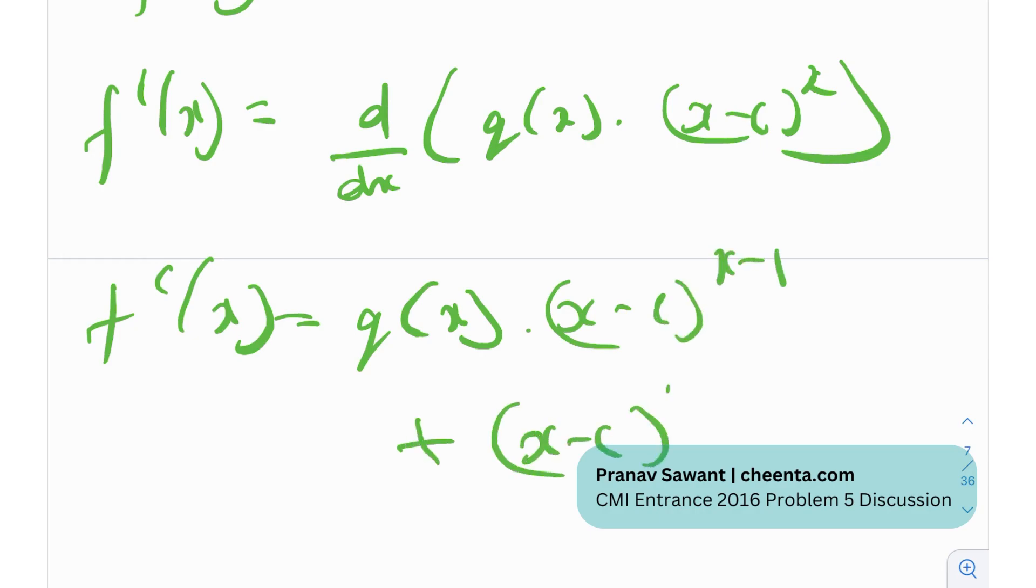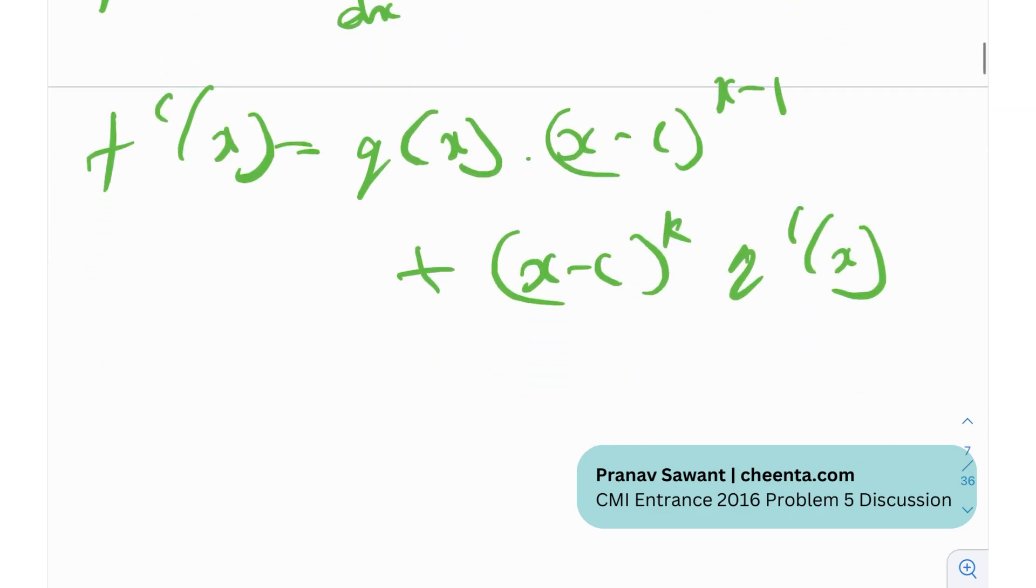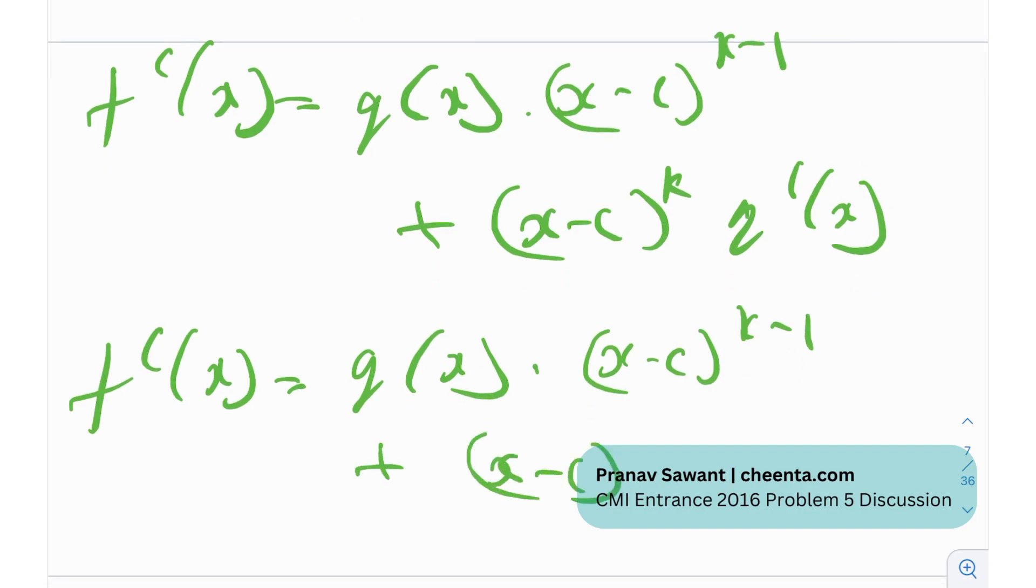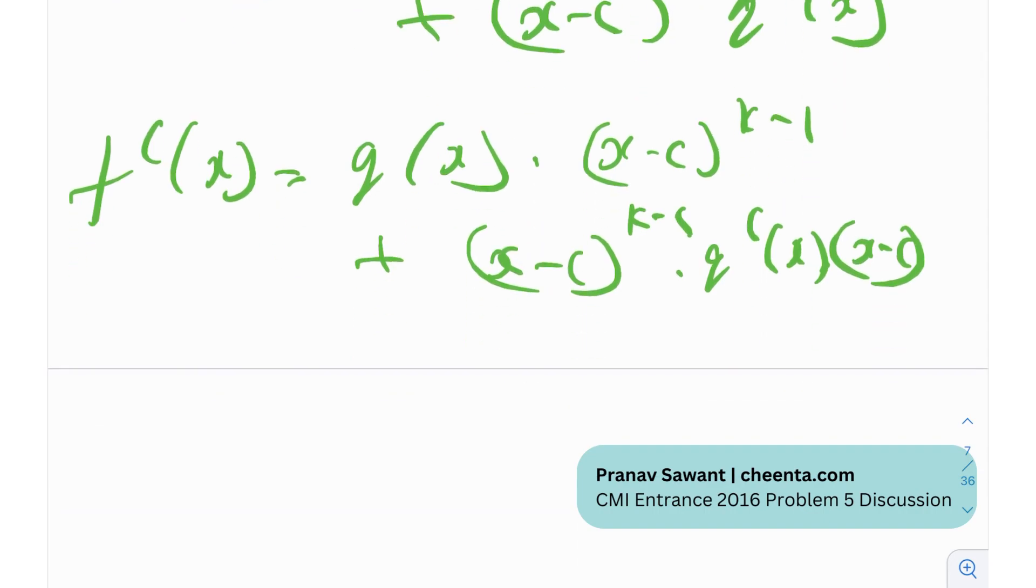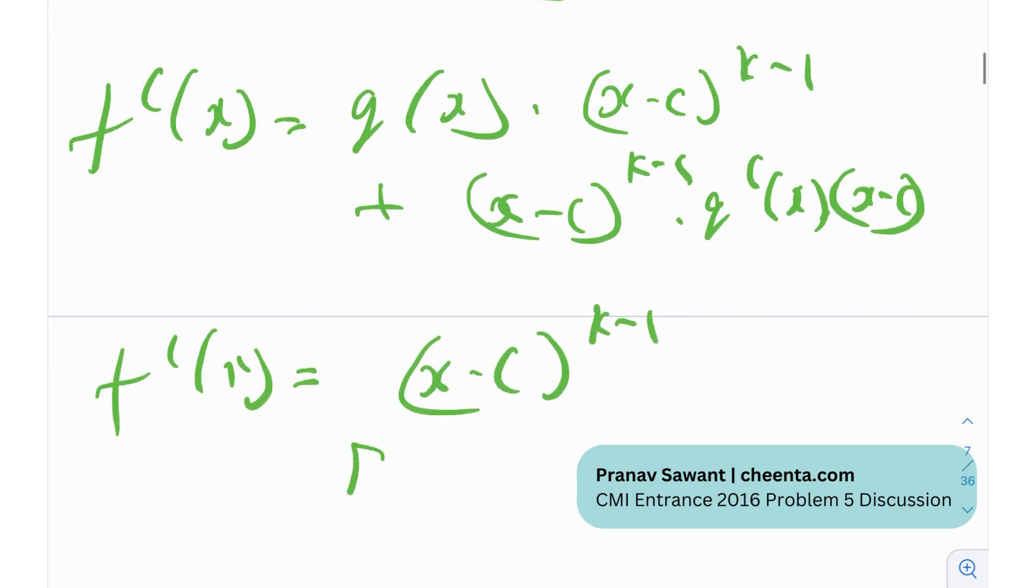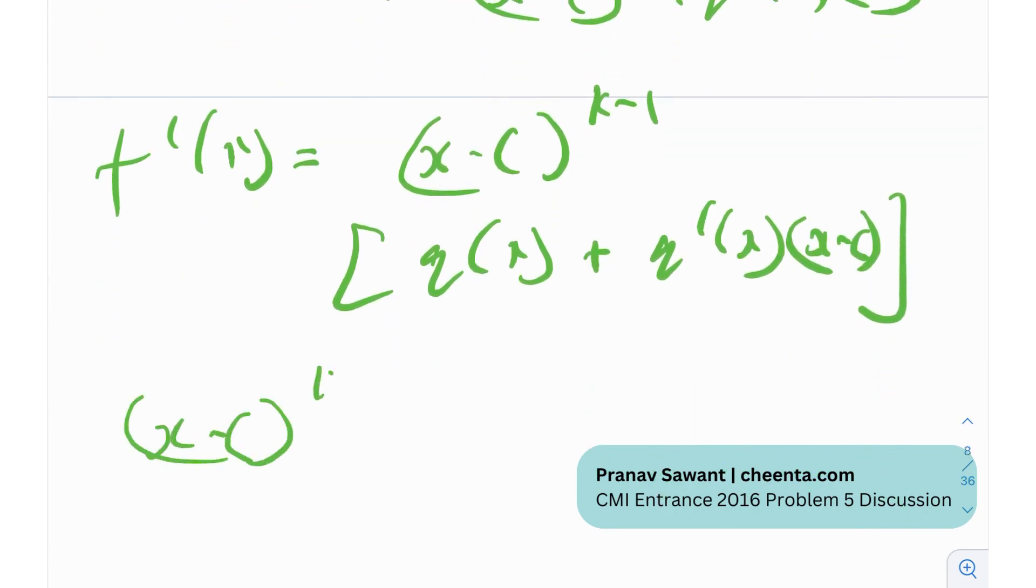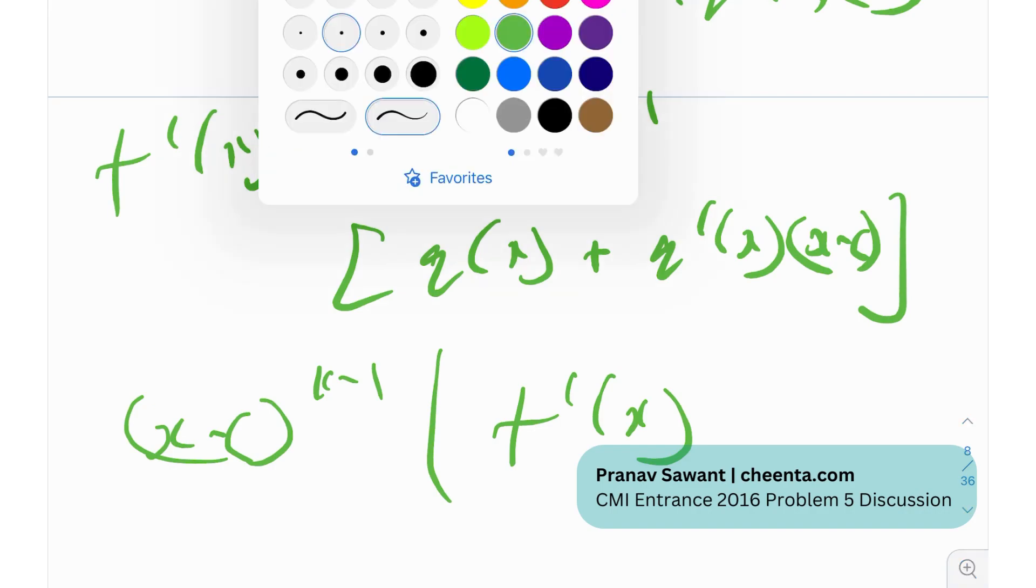plus (x minus c) to the k times q prime x right and how can we kind of simplify this a little bit so I can just manipulate this in this manner this I can write as (x minus c) raised to the power k minus 1 times q prime x times (x minus c) right now splitting this up into k minus 1 and 1 so f prime x essentially then becomes (x minus c) raised to the power k minus 1 if I take that common I will be left with q of x plus q prime x times (x minus c) so we can actually see that (x minus c) raised to the power k minus 1 divides f prime of x and this theorem is hence proven that's what we wanted to prove.